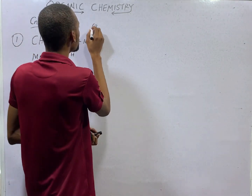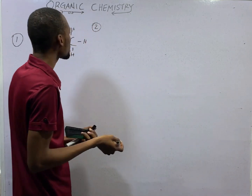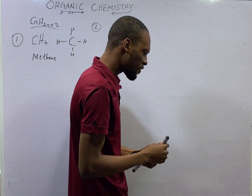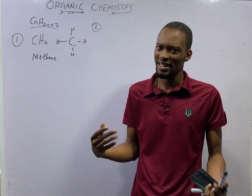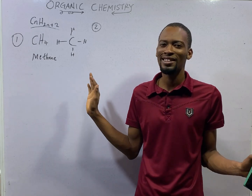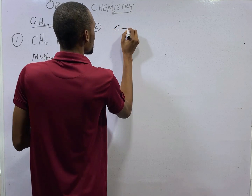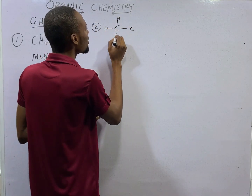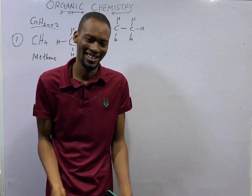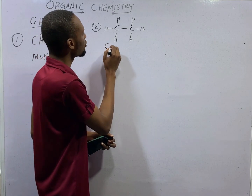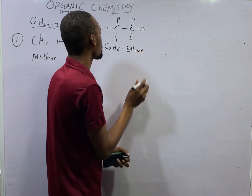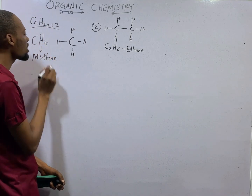The second member will simply be when carbon is 2. The number of hydrogens will be 2 times 2, that is 4 plus 2, equals 6. But ladies and gentlemen, I don't think you even need to be calculating when it comes to alkanes. Just draw the number of carbons, fill hydrogen around it, making sure each carbon has 4 bonds. If you have 2 carbons with hydrogen filling the bonds, all carbons have 4 bonds. This is the second member — C2H6. This is referred to as ethane. CH4 is methane.